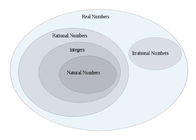First, take a look at this chart. This chart shows how to classify numbers and all of the different classifications that numbers could fall under. Notice that the biggest bubble is real numbers. All numbers are real, whether they're rational or whether they're irrational — they're all real numbers.